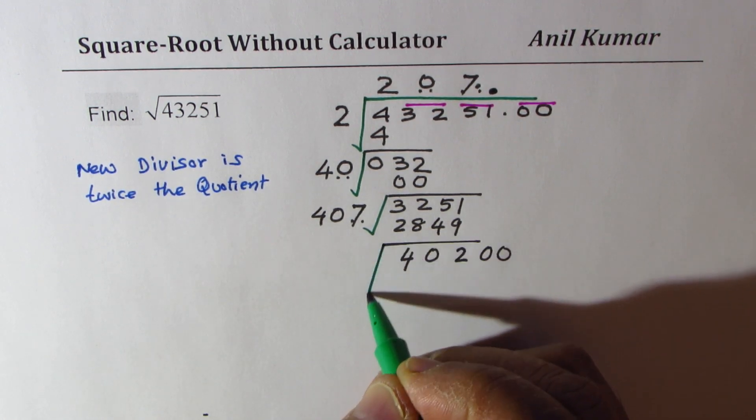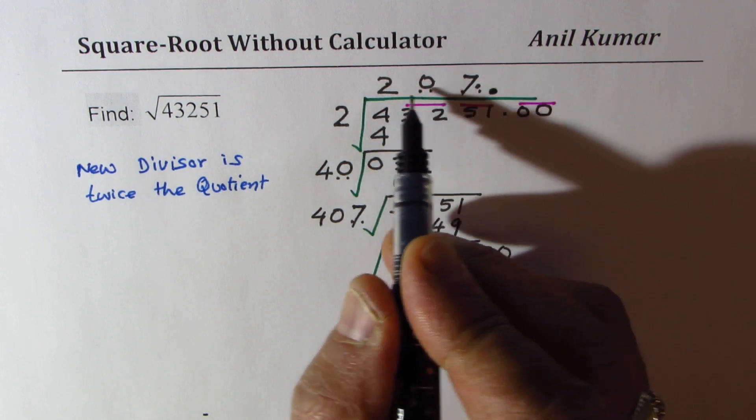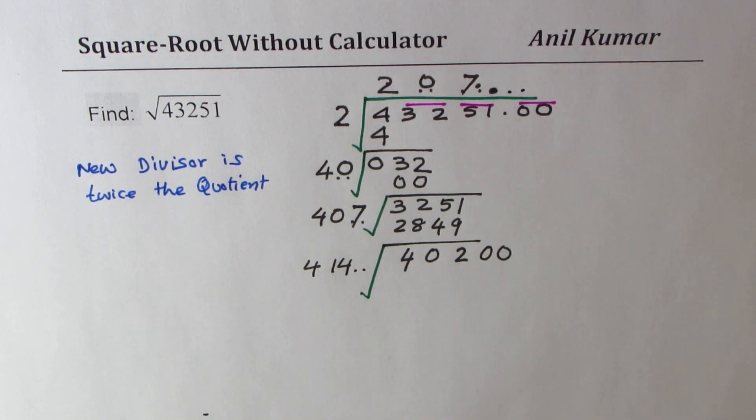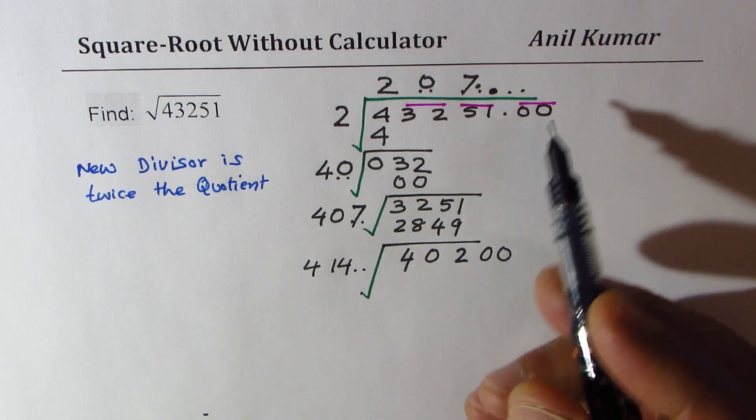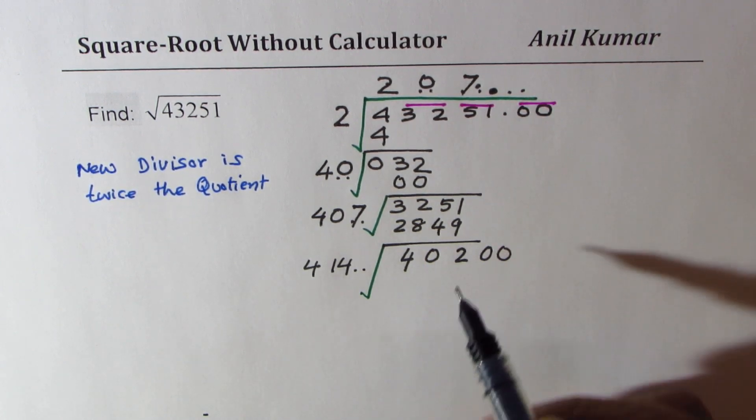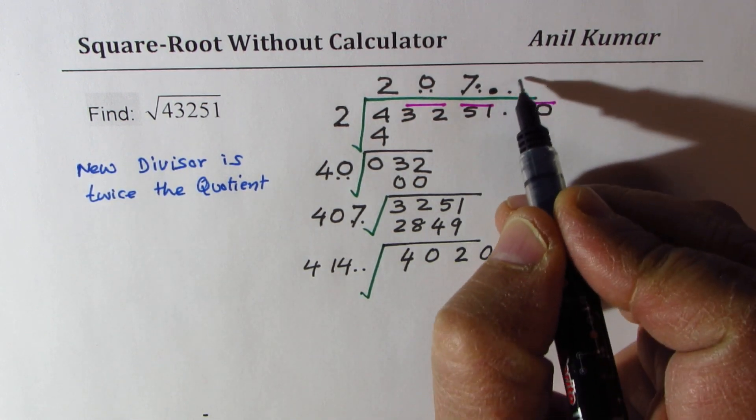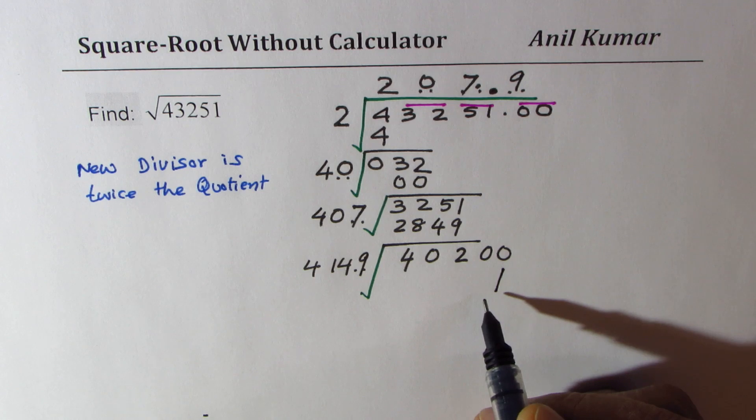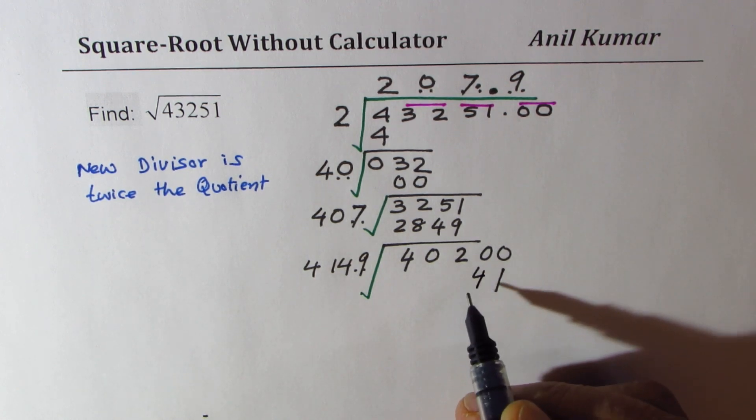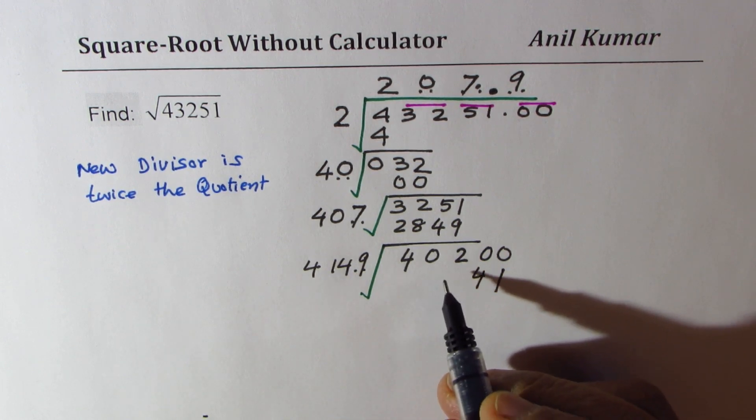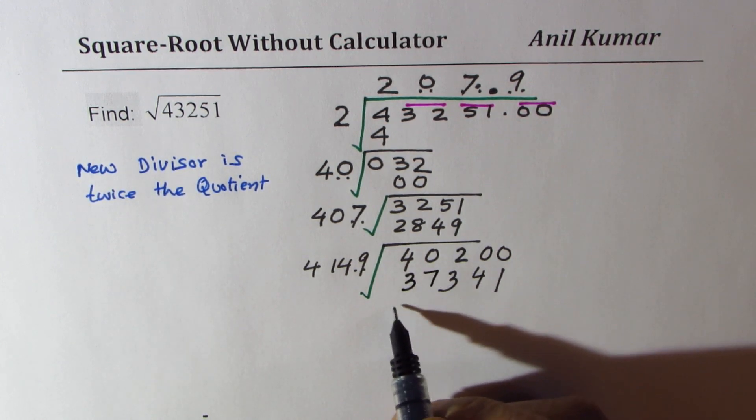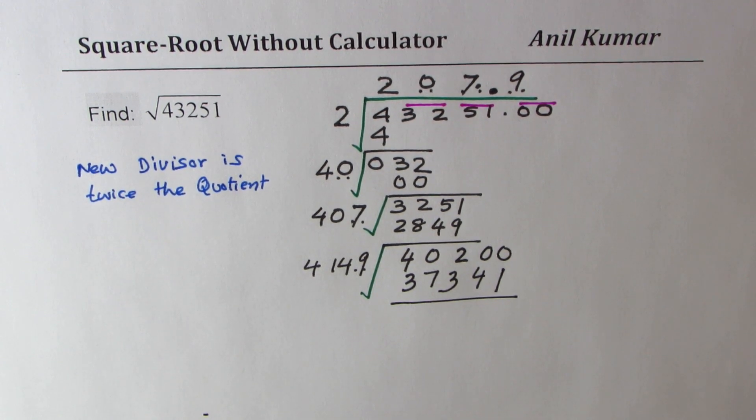And what should be the divisor? Well, the divisor has to be twice the quotient, so which is going to be 414. Now we have to look for a number which should be placed in the divisor and as a part of quotient. That could be a big number. Let's try 9. 9 times 4 is 36. That should be good enough, so 9 can work. 9 times 9 is 81. We get 1 and 8. 9 times 4 is 36 plus 8 is 44. 9 times 1 is 9 plus 4 is 13. So we'll end the process here. So we got this square root of the number which was 43251 as equal to 207.9.